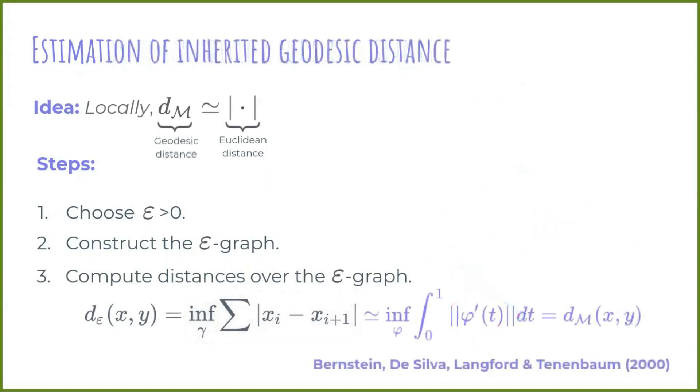In 2000, the creators of this estimator proved that, under some conditions in epsilon and the size of the sample, this estimator is a good estimator of the geodesic distance.